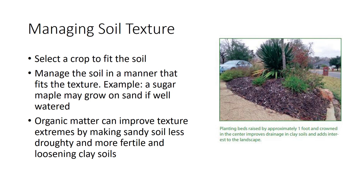There are three ways for growers to take texture into account. First, select a crop to fit the soil or purchase land that suits the crop. For example, an apple grower may purchase land with a fine soil on which apples grow best. In many landscapes, a sugar maple (Acer saccharum) will not thrive on a sandy soil, while a red maple (Acer rubrum) might do well. An axiom of landscape design is to put the right plant in the right place, and texture is an element of that. Second, manage the soil in a manner that fits the texture—with proper fertilization and irrigation, coarse soils can be very productive. When planting landscape trees in Minnesota in heavy clay soils, many landscapers plant high, with the top of the root ball a couple of inches above grade with a low mound of soil around it, improving aeration and reducing excess wetness around the roots.